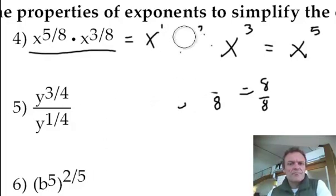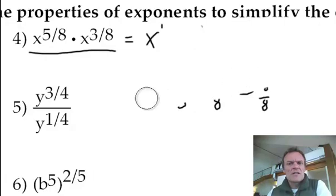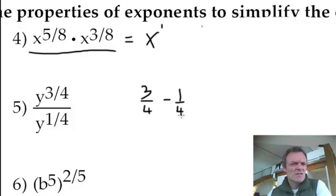Let's look at the next one. This is a division. Remember what to do with divisions? You subtract the exponents. So if I look at the exponents, it's 3/4 take away 1/4. That's what it's going to give me.